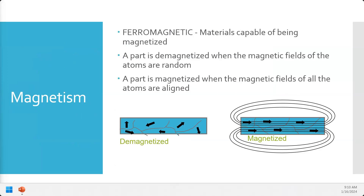We're going to take the part from a demagnetized state and force it into a magnetized state, either by running electricity through it or running electricity through a coil nearby that induces a strong magnetic field. You can magnetize the part — get all these fields in the same direction — by placing a ferromagnetic material in close proximity to a strong magnetic field, or the part itself can build a strong magnetic field through electromagnetism. When you shut that current off, those poles all stay aligned.